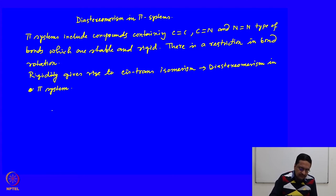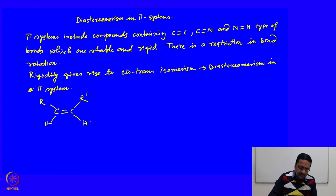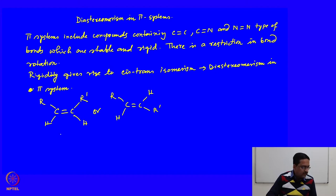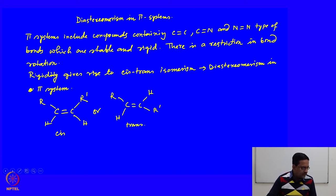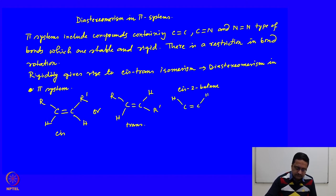We are working on molecules which have a C=C double bond, with groups on one side of the double bond or the opposite side. When they are on the same side, we call it cis, and when the groups are on the opposite side, we call them trans. Common examples are cis-2-butene and trans-2-butene.